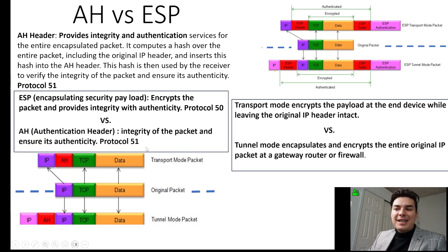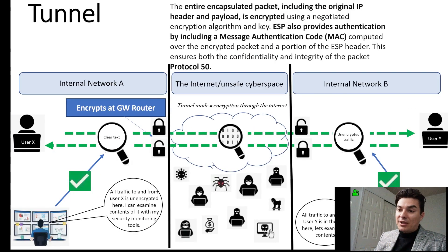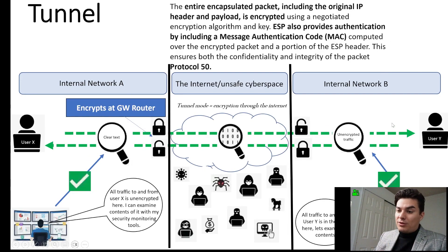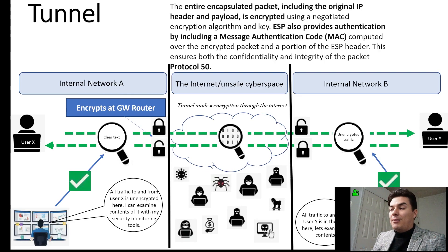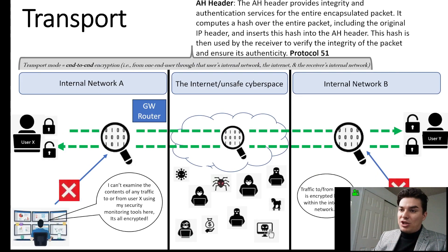Authentication header provides integrity and authentication — and only integrity and authentication. So in both tunnel and transport mode, everybody would be able to read everything if they use the authentication header. But it would let the end user know if any of the information was changed, because it provides integrity and authentication.